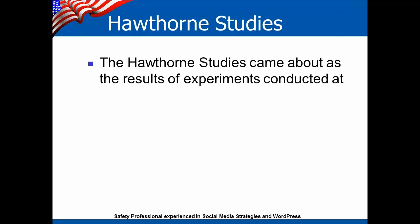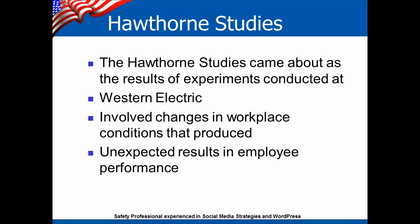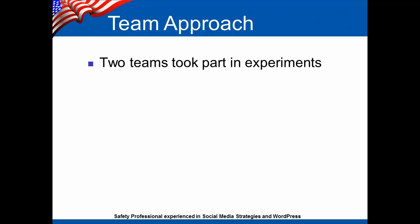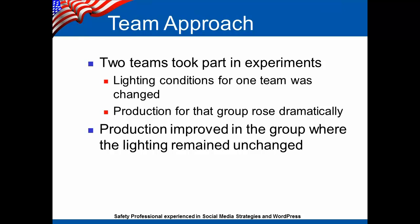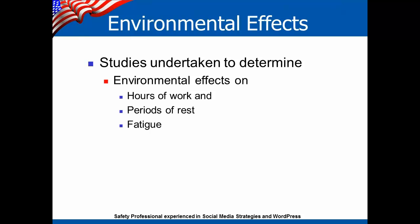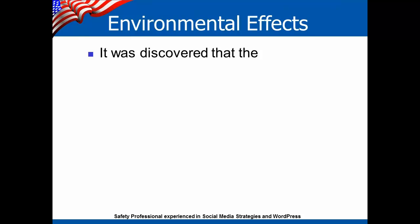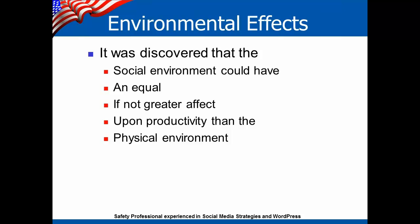In the early years of management science, the Hawthorne studies came about as a result of experiments conducted at Western Electric and involved changes in workplace conditions that produced unexpected results in employee performance. Two teams of employees took part in these experiments, where the lighting conditions for one team was changed. Productivity for that group rose dramatically. The interesting thing is that production also improved in the group where the lighting remained unchanged. The studies were undertaken to determine what environmental effects, such as hours of work and periods of rest, might have on employee fatigue and productivity. As these studies progressed, it was discovered that the social environment could have an equal, if not greater, effect upon productivity than a physical environment.